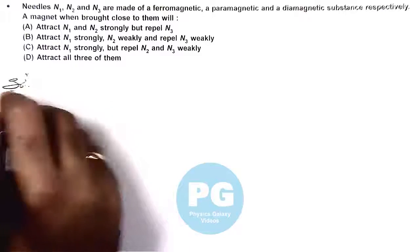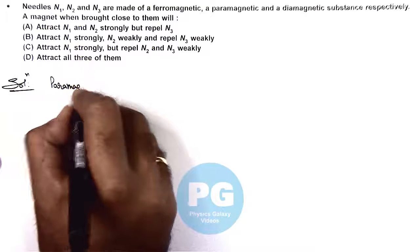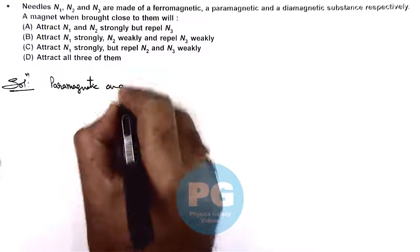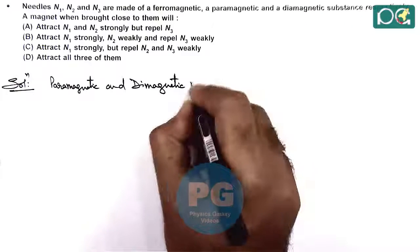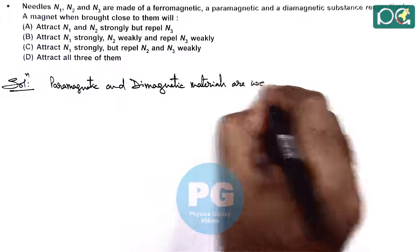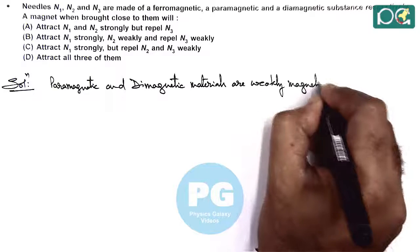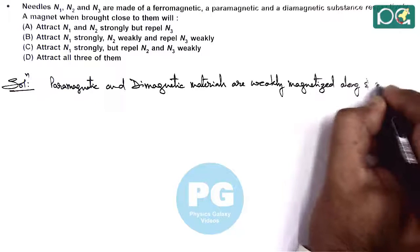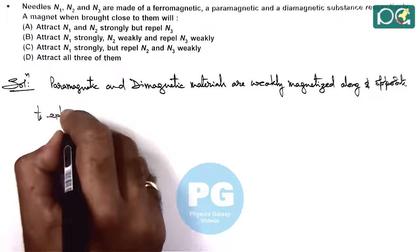So here we can write: paramagnetic and diamagnetic materials are weakly magnetized along and opposite to external field.